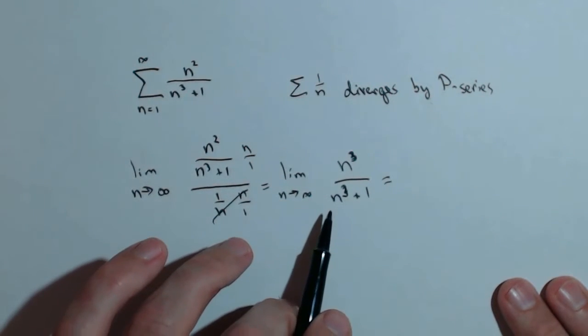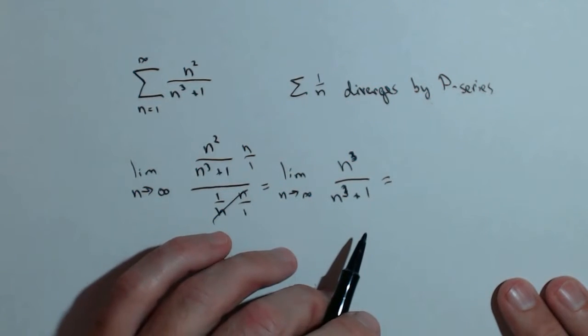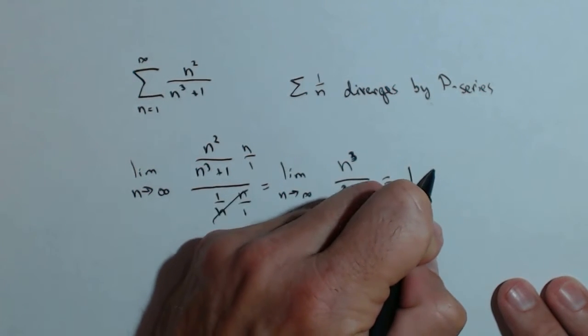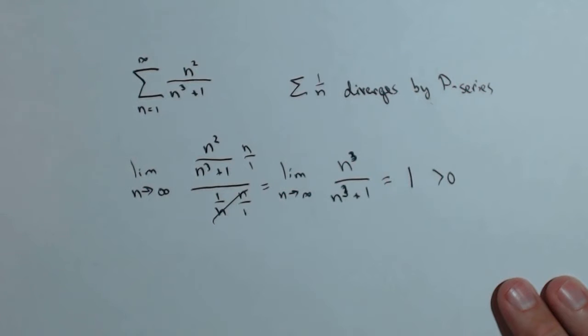You may recognize this limit right away. If you don't, one round of L'Hopital's rule will find it for you. You're going to get 1, which is a non-zero finite number. Therefore, since this one diverges, our original must diverge by the limit comparison test.